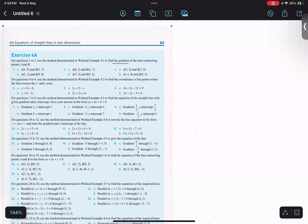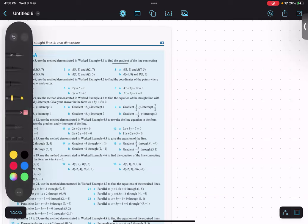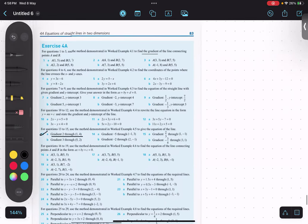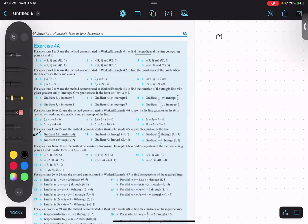Question number 13 talks about gradient is given and one point is given. So when gradient is given that means m is given.